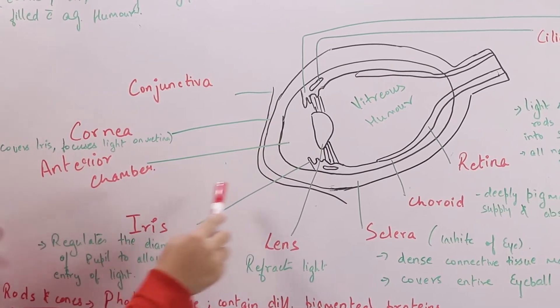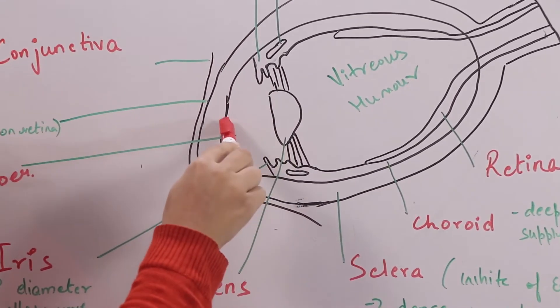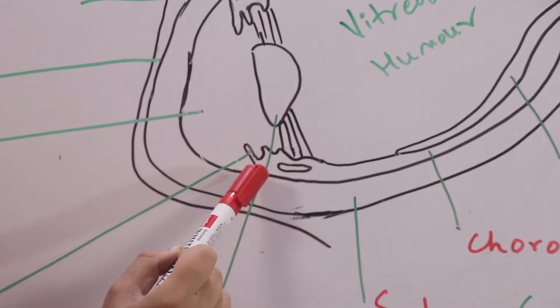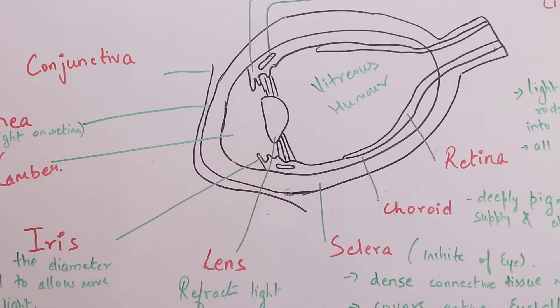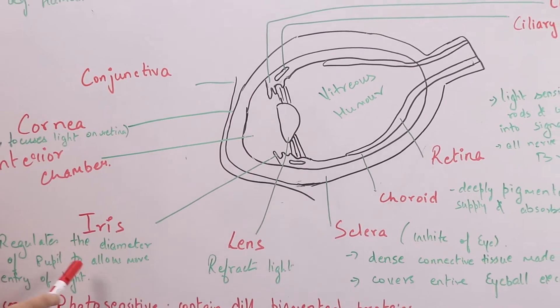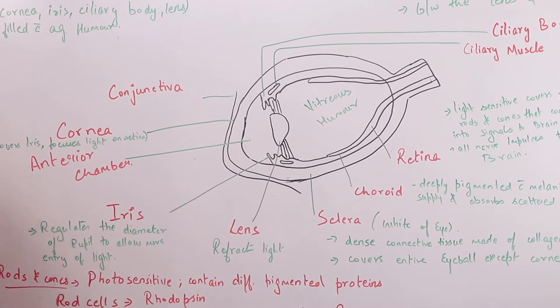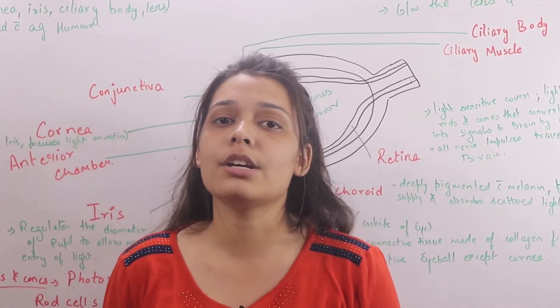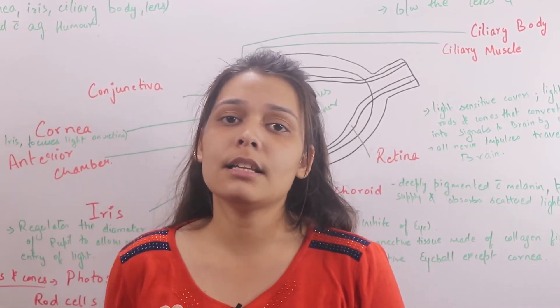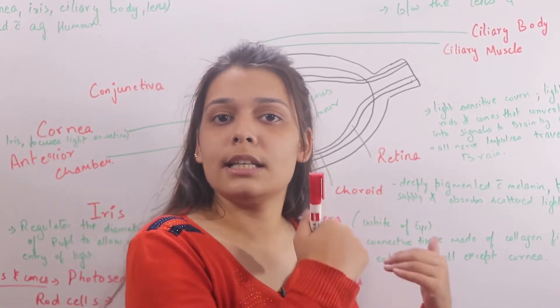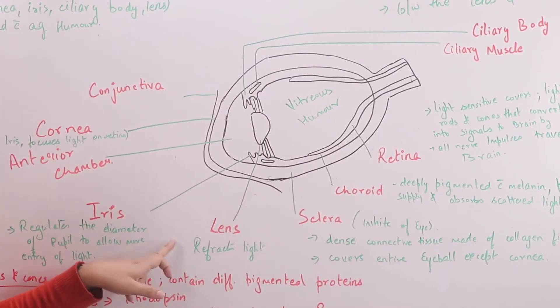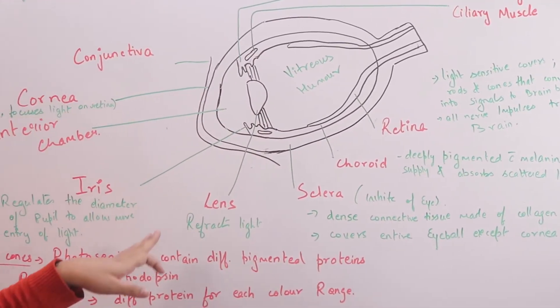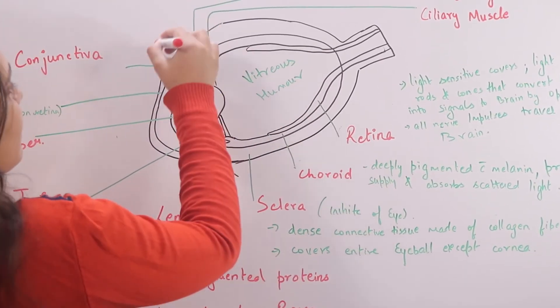Second is our anterior chamber, this present space. This is a hair-like structure here, we call the iris. What is the iris doing? It regulates the diameter of the pupil and allows entry of light. The pupil is in this part.